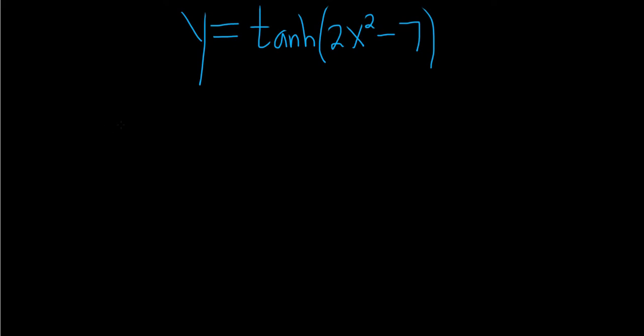In this problem, we have to find the derivative of the hyperbolic tangent of 2x squared minus 7. So there is a formula we have to use in order to do this problem.